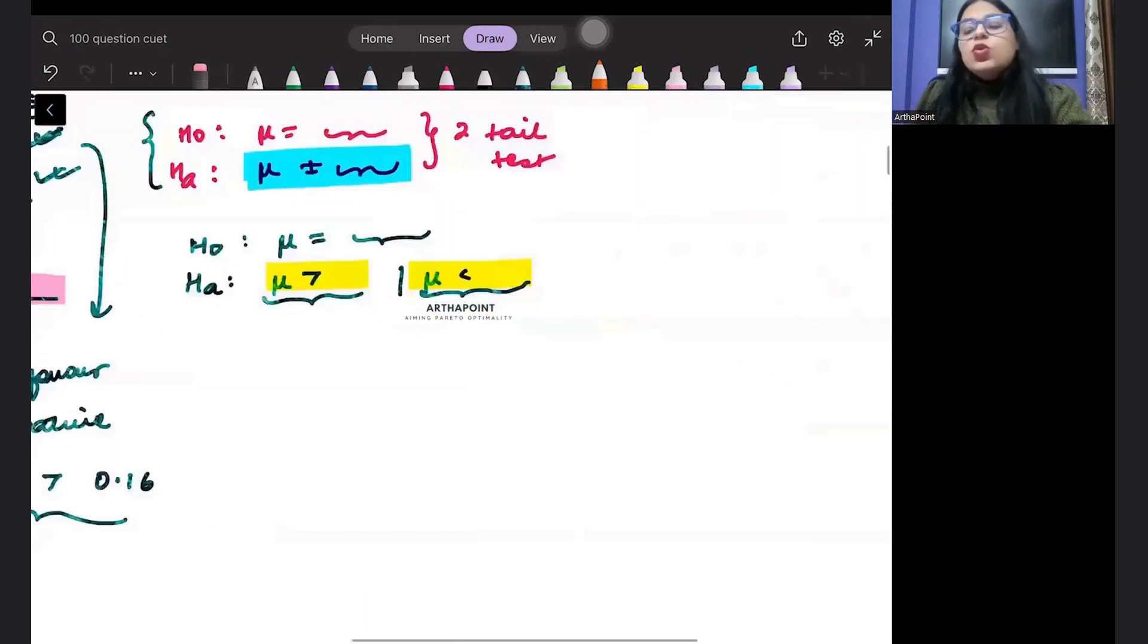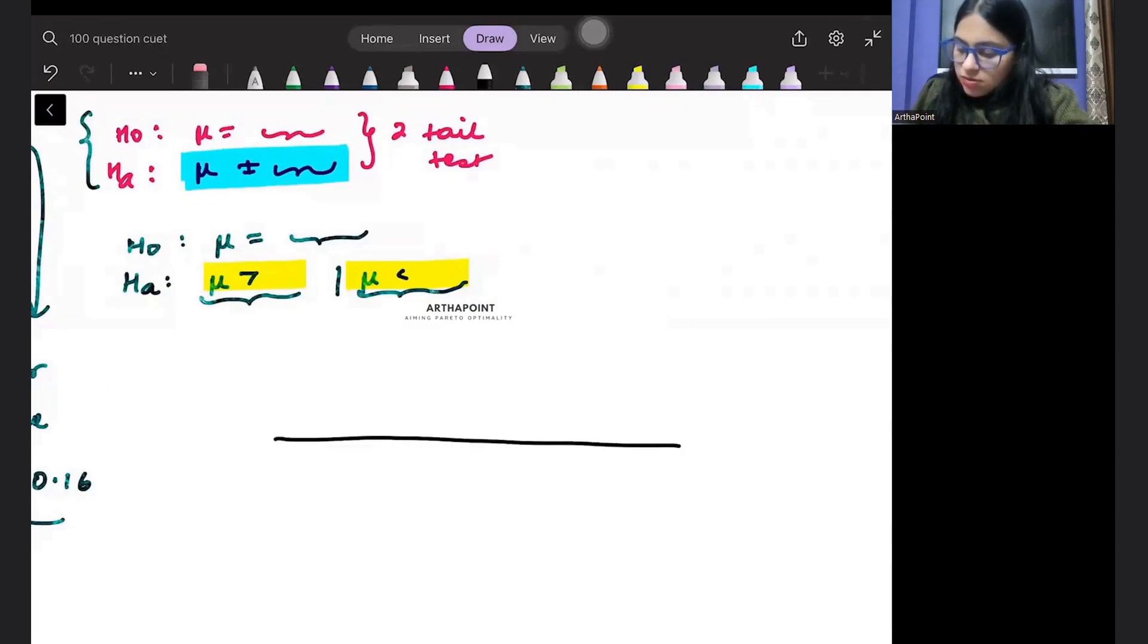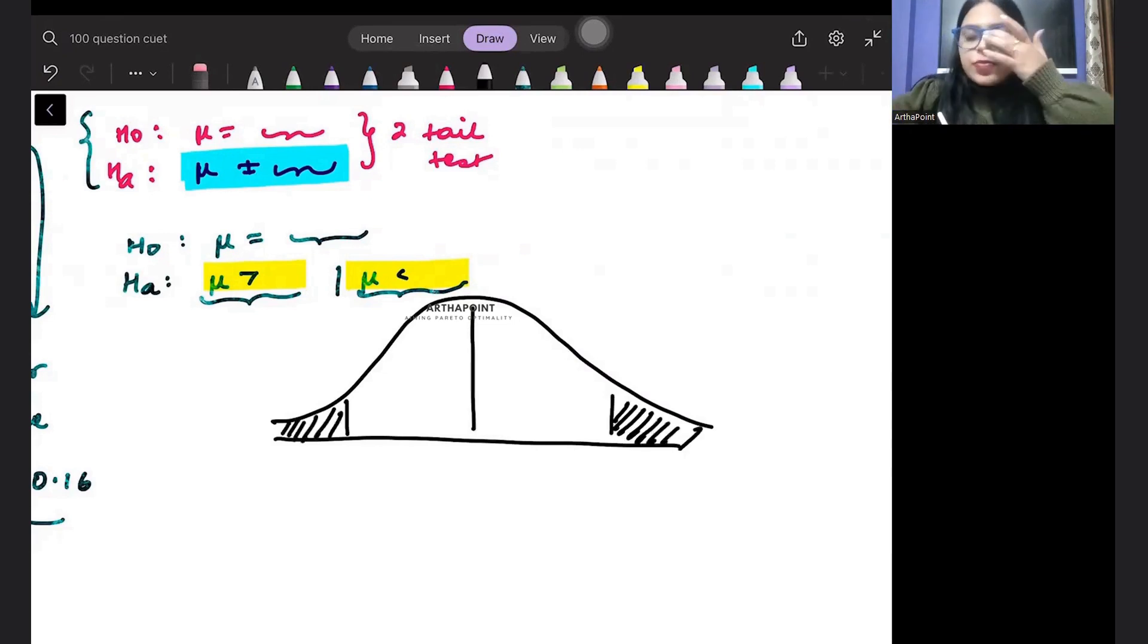Had it been a two-tailed test, agar yeh a two-tailed test hota, right? Then beta, your rejection region would have been on both the sides. Here also and here. Clear? Okay beta. Thank you.